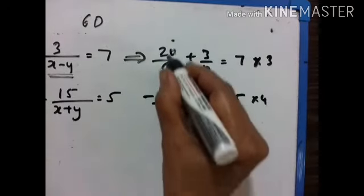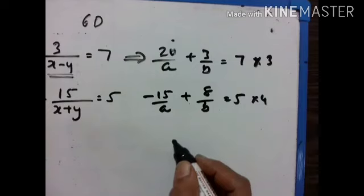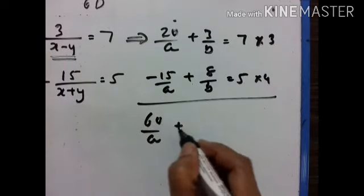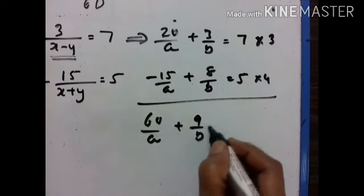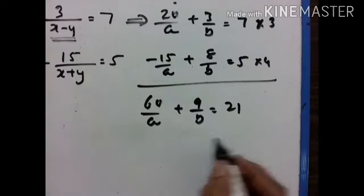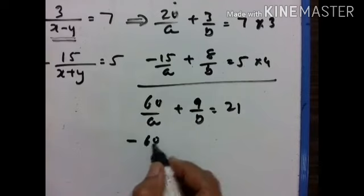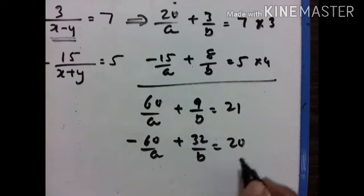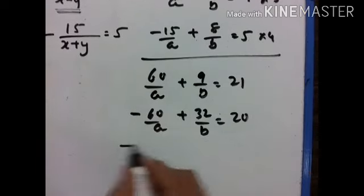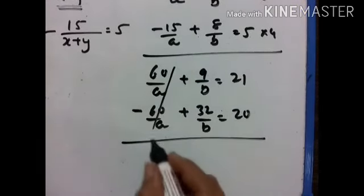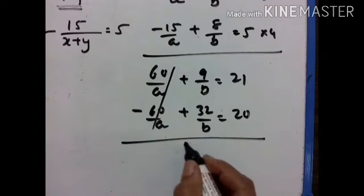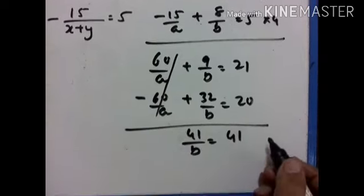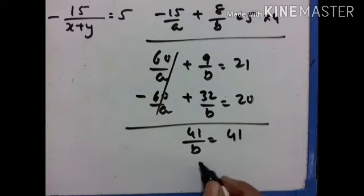To make the coefficients equal: 60 upon a plus 9 upon b is equal to 21, and minus 60 upon a plus 32 upon b is equal to 20. The 60 upon a terms cancel, giving 41 upon b is equal to 41.